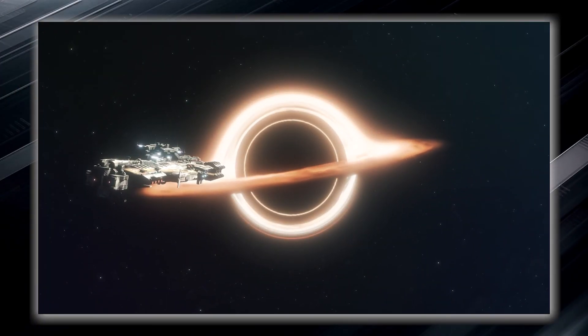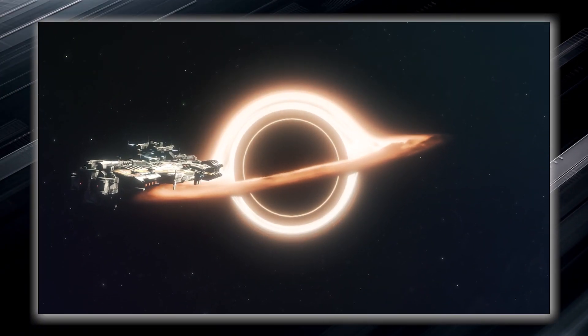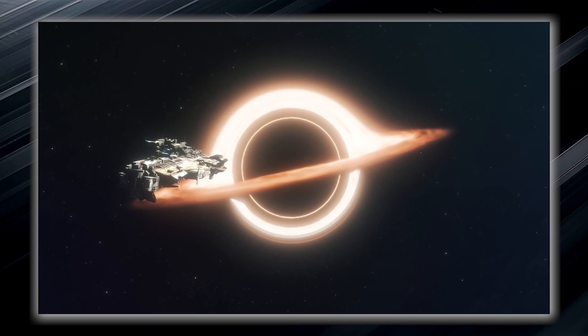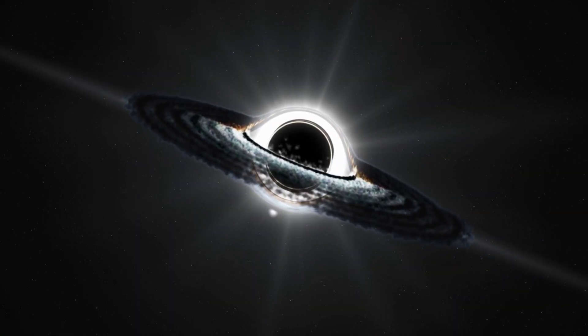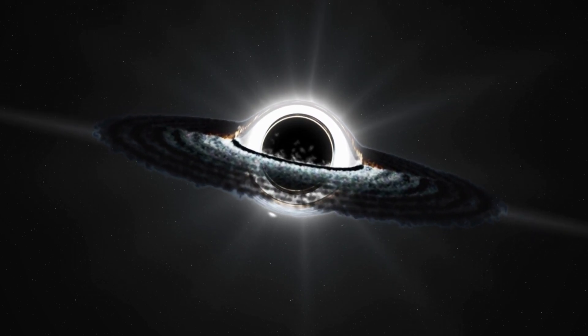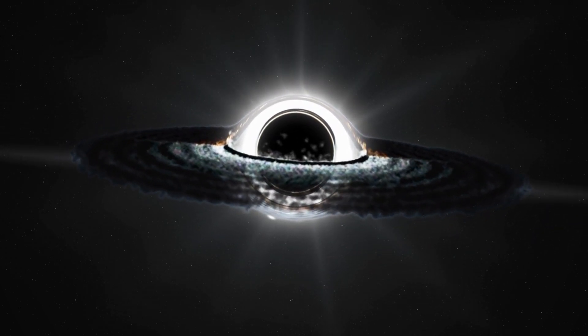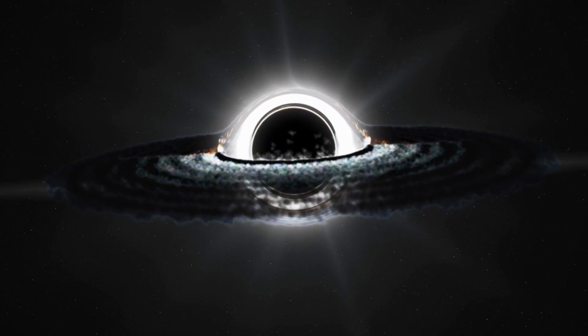Once something, such as an unfortunate spacecraft or even light, crosses its boundary, it can never escape the clutches of the black hole. The event horizon forms an invisible force field that holds everything within it, including light, which is normally considered the fastest entity in the universe.